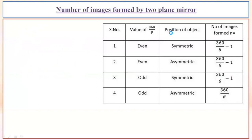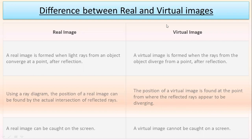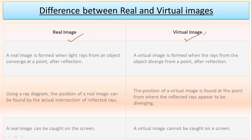Now let's move to the next part and discuss the difference between real images and virtual images. Real images are those images which are formed by the actual intersection of reflected or refracted light rays — when reflected or refracted light rays actually meet or interact with each other, the image obtained is called a real image.